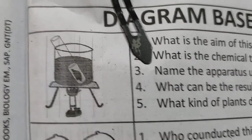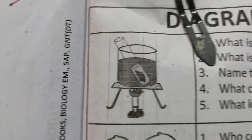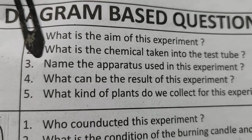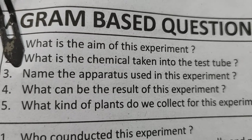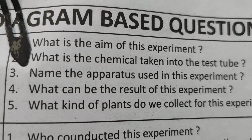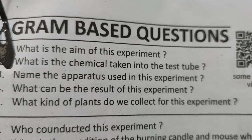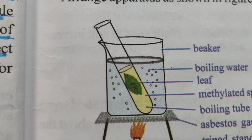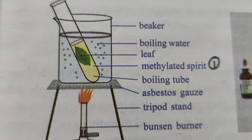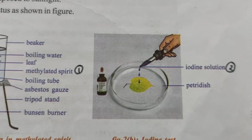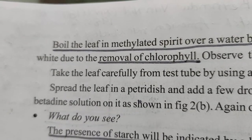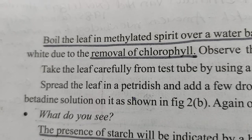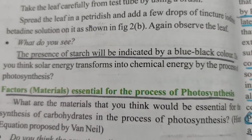Possible questions from this experiment: What is the aim of this experiment? What is the chemical taken in the test tube? Name the apparatus used. What can be the result? What conclusion do you draw? The chemicals used are methylated spirit and iodine solution. We boil the leaf in methylated spirit to remove chlorophyll, and the presence of starch is indicated by the blue-black color.